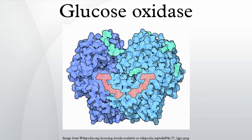At pH 7, glucose exists in solution in cyclic hemiacetal form: 63.6% β-D-glucopyranose and 36.4% α-D-glucopyranose, the proportion of linear and furanose forms being negligible. Glucose oxidase binds specifically to β-D-glucopyranose and does not act on α-D-glucose. It is able to oxidize all of the glucose in solution because the equilibrium between the α- and β-anomers is driven towards the β side as it is consumed in the reaction. Glucose oxidase catalyzes the oxidation of β-D-glucose into D-glucono-1,5-lactone, which then hydrolyzes to gluconic acid.